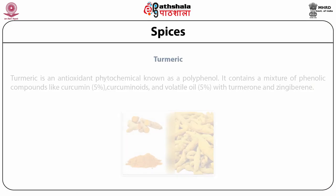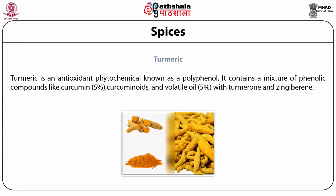Turmeric is an antioxidant phytochemical known as a polyphenol and has a chemical composition of C21H20O6. It contains a mixture of phenolic compounds called curcumin, about 5%, and related compounds called curcuminoids, and a volatile oil about 5%, with turmerone and zingiberene.